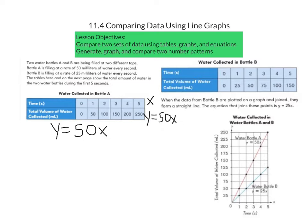For bottle B, after one second it had collected 25 mL. After two seconds, the bottle had collected 50 mL, and after three seconds the bottle had collected 75 mL. So the equation that would represent this data would be Y equals 25X, because for every second that we add, we multiply that by 25.